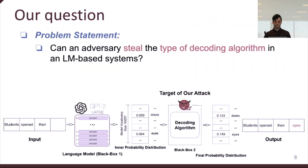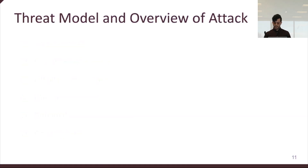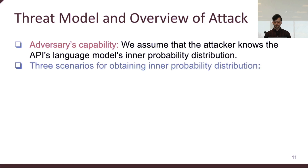Given this cost, the question is: can an adversary steal the type of decoding algorithm and corresponding hyperparameters, and if yes, at what cost? The framework has two probability distributions: the inner probability distribution provided by the language model, and the final probability distribution after applying the decoding algorithm. The threat model assumes the attacker knows the API's language model's inner probability distribution, a standard assumption in the NLP community — some models like GPT-3 and GPT-4 provide top-token probabilities, and many open-source models on HuggingFace also provide these.